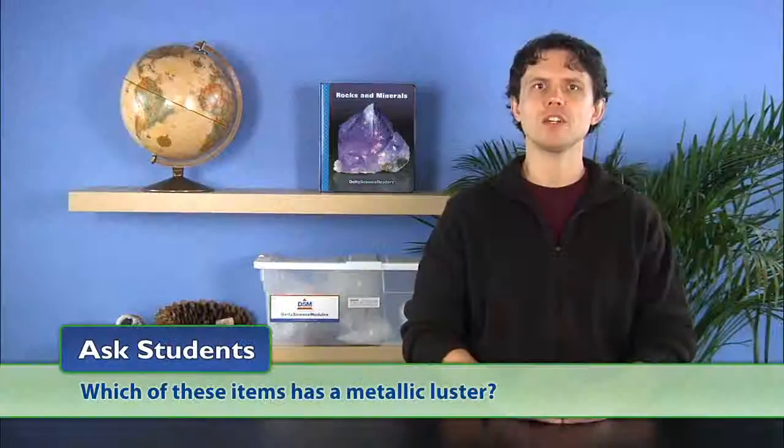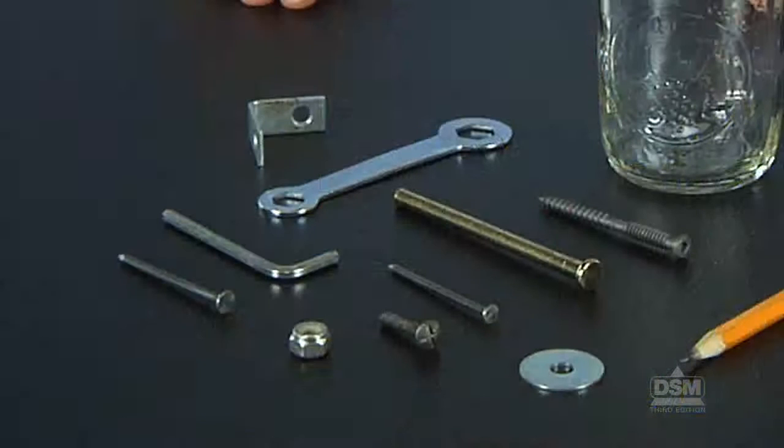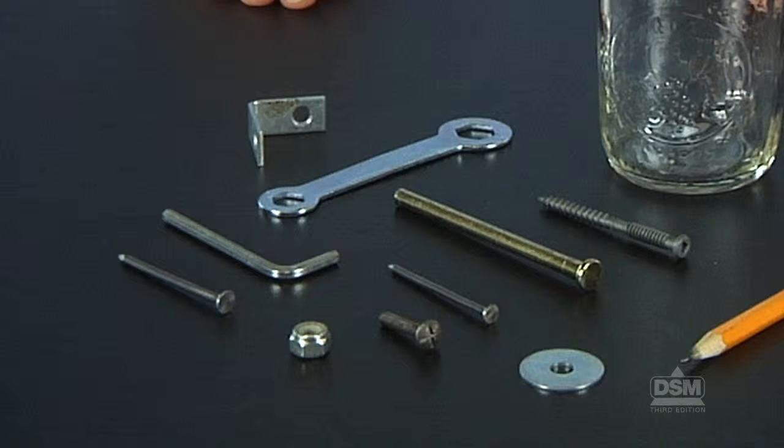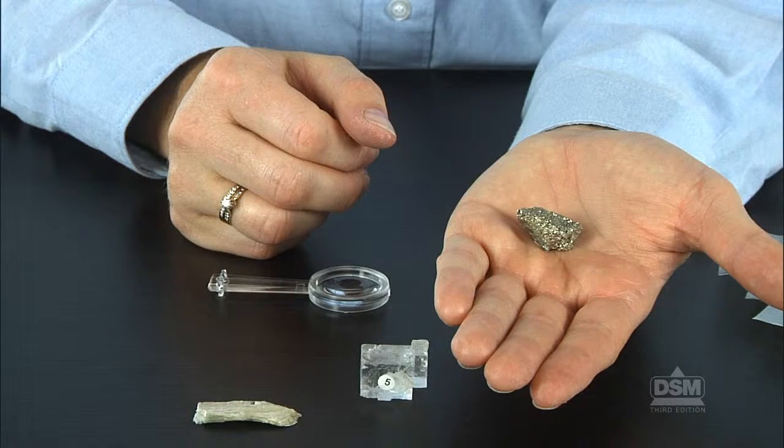Ask students which of these items has a metallic luster. Students will probably agree that the pieces of polished and unpolished metal, the nail, and specimen eight all have a metallic luster.